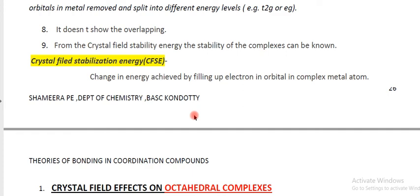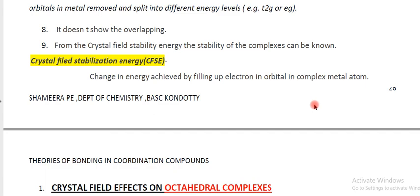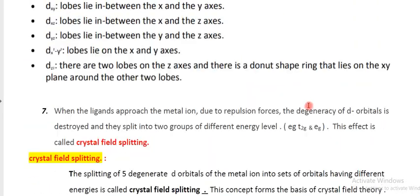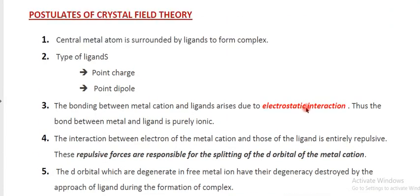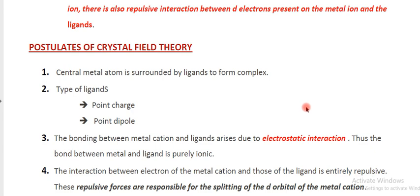The eighth postulate states that this theory does not involve orbital overlapping; it is only based on splitting. The ninth and last postulate is that the stability of a complex can be known from the crystal field stabilization energy (CFSE). According to CFT, the stability of a complex is identified on the basis of CFSE, which is the change in energy achieved by filling electrons in orbitals in the complex metal atom. These are the nine postulates of CFT.